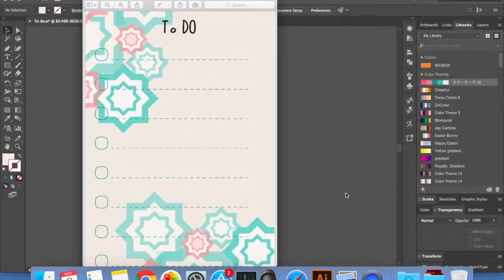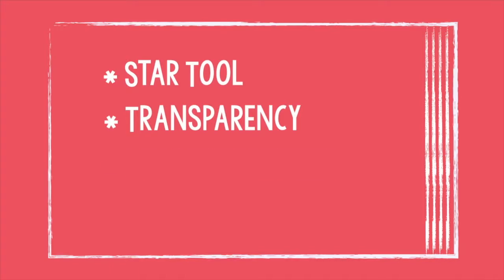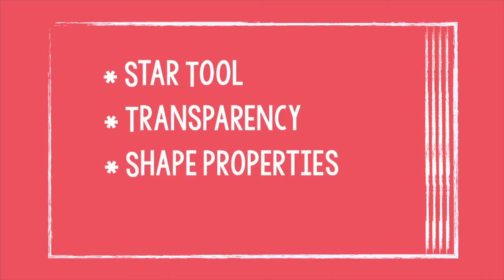Hello and welcome back to my channel. Today's video is a simple tutorial on how to create a to-do list from very basic shapes. In this tutorial we're going to learn a few new things: how to use the star tool and modify it to have as many edges as you want, how to use the transparency option, how to use shape properties to modify a rounded rectangle, and how to use the artboard tool to set the artboard to whatever size we want. So let's get started.